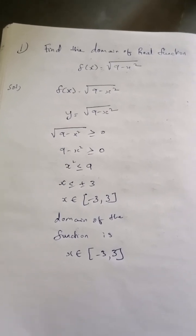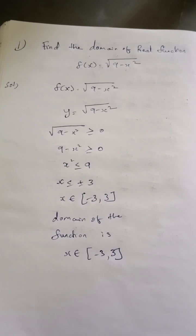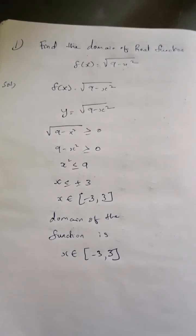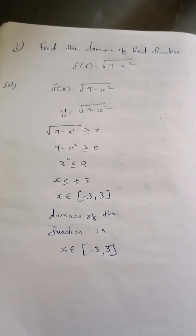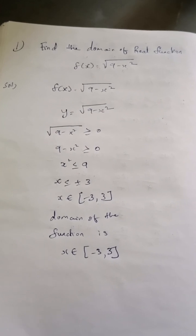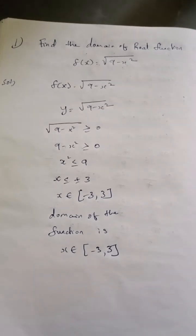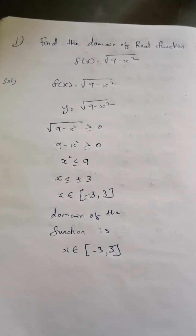If x squared goes on the right side, the less than or equal to symbol will be changing because it is a negative term. So x squared is 9, then x will be plus or minus 3. x belongs to minus 3 comma 3. This is the domain of the function.